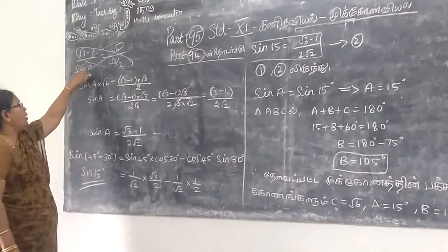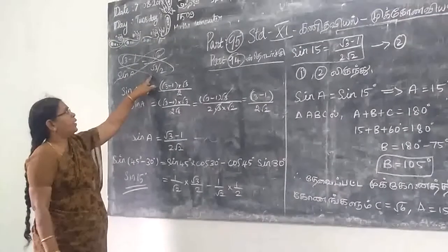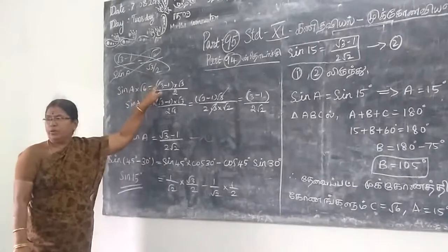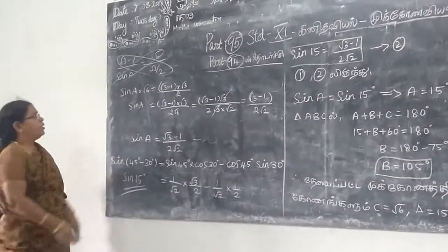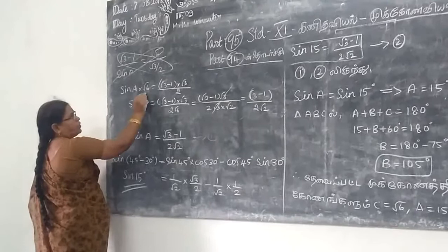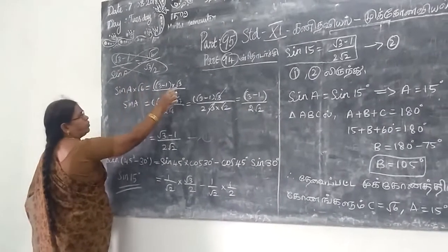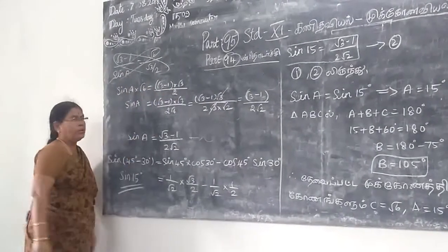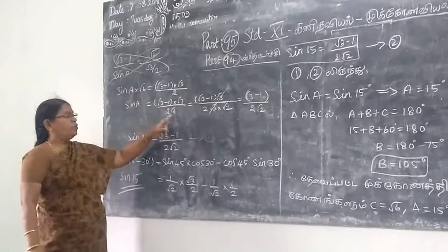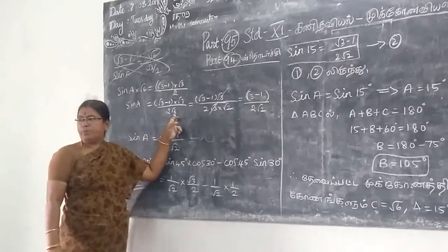Root 3 minus 1 by sin A, equal to root 6 by root 3 by 2. Now we cross multiply. Sin A root 3 equals root 3 minus 1 into root 3 by root 6.